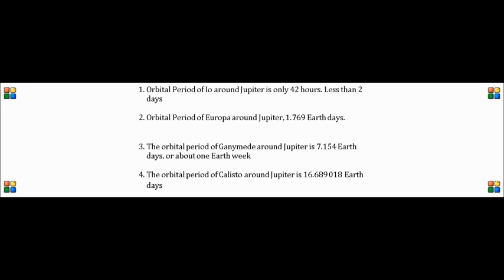You get the idea that these moons move around Jupiter and they're not going to look the same — it's three-dimensional. It's not static, it's dynamic. Dynamic means it moves; static means it doesn't move or change. We all know everything moves in space.